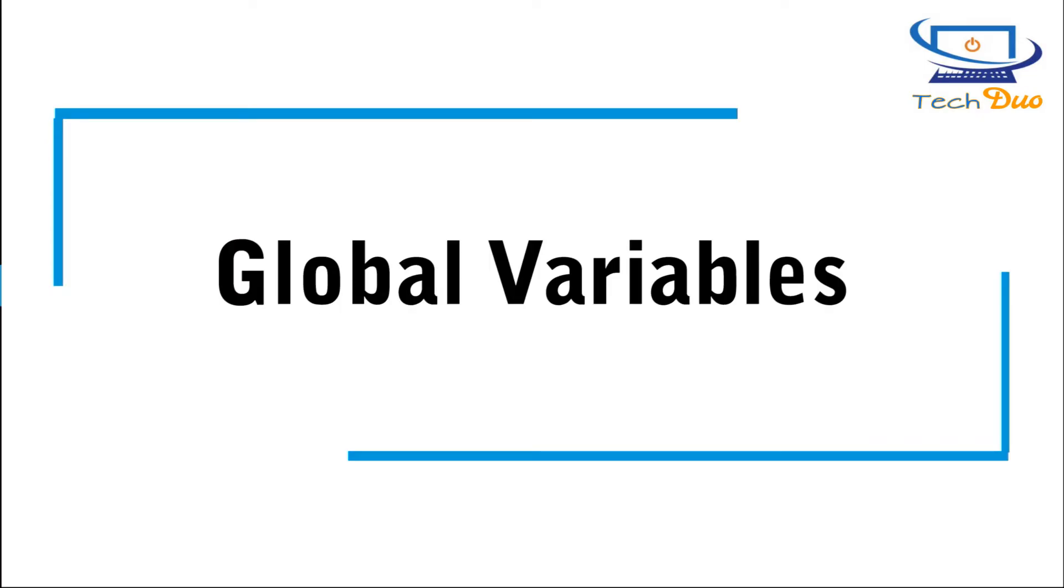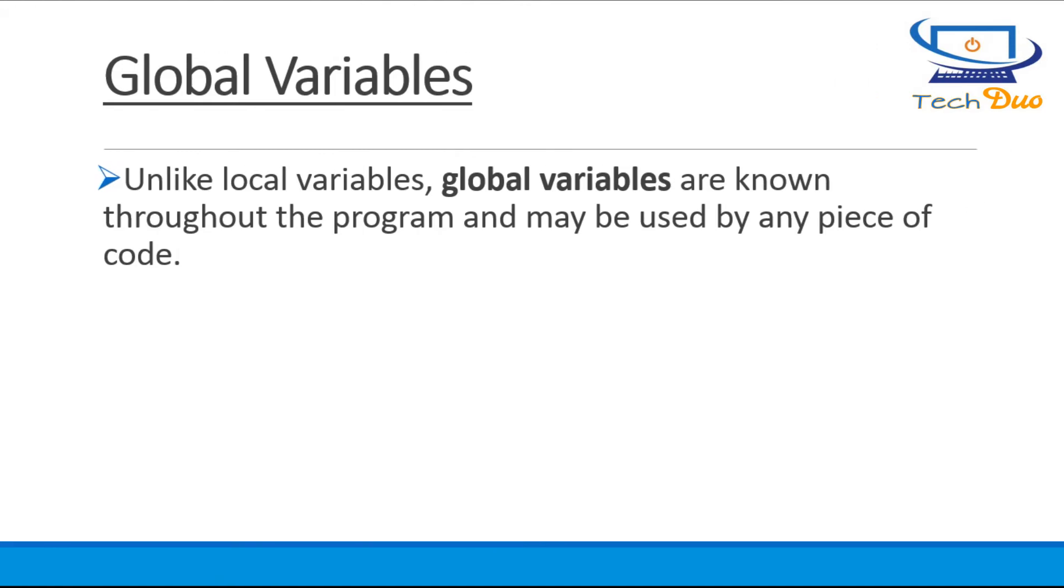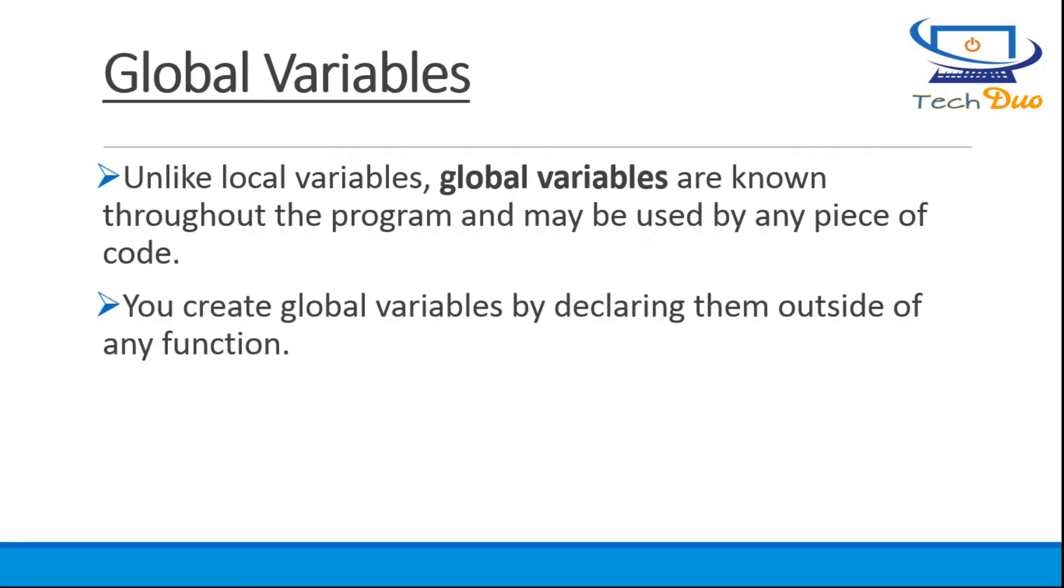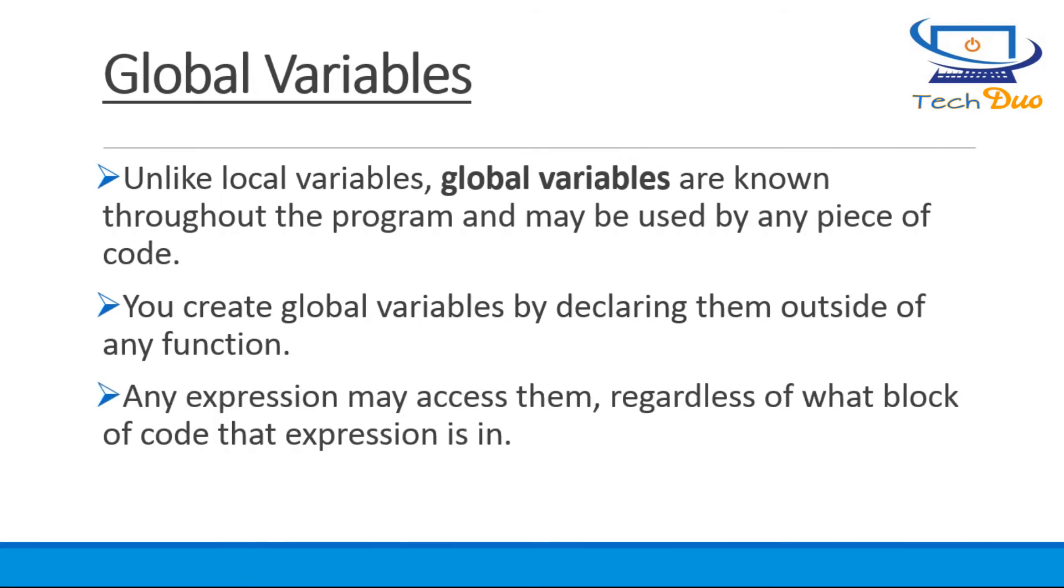Global variables. Unlike local variables, global variables are known throughout the program and may be used by any piece of code. You create global variables by declaring them outside of any function. Any expression may access them, regardless of what block of code that expression is in.